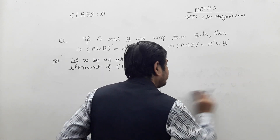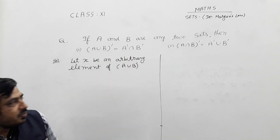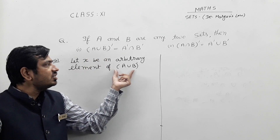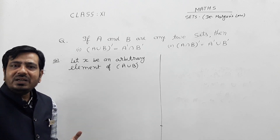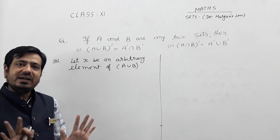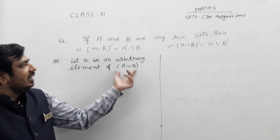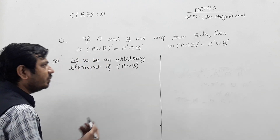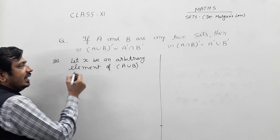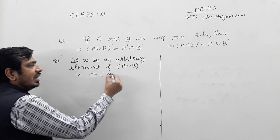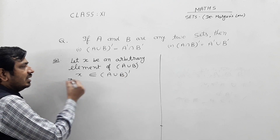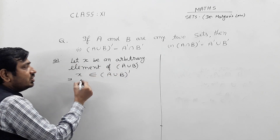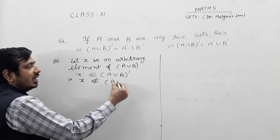To show two sets are equal, take any arbitrary element from the left-hand side. Let x be any arbitrary element, so x belongs to A union B whole dash. Since x belongs to this dash, it means x does not belong to A union B. If x does not belong to A union B, this implies x does not belong to A and x does not belong to B.